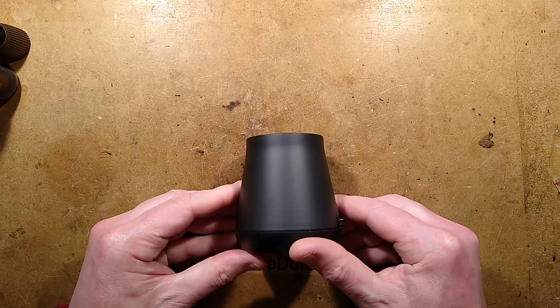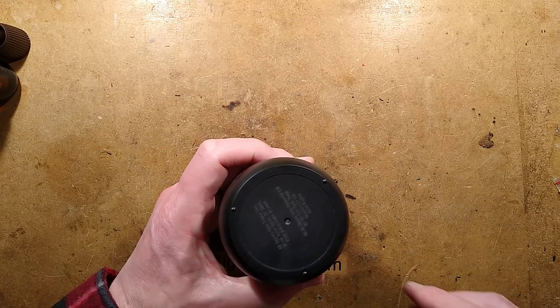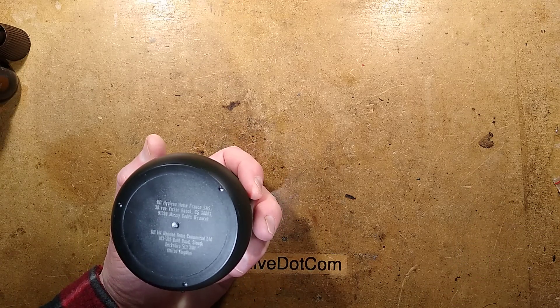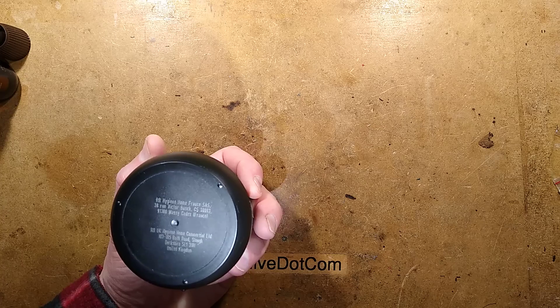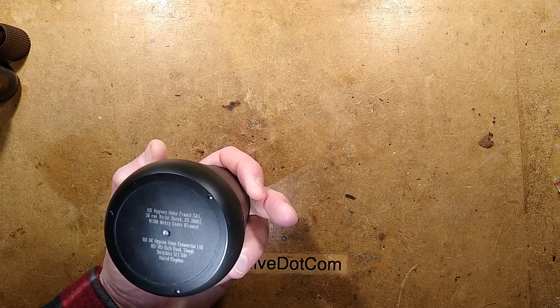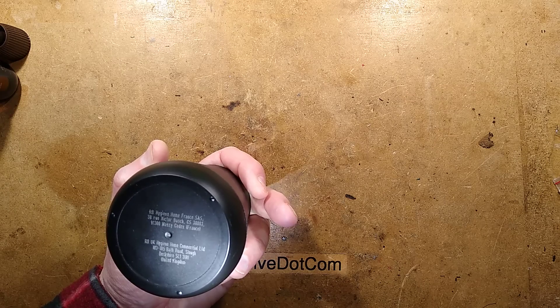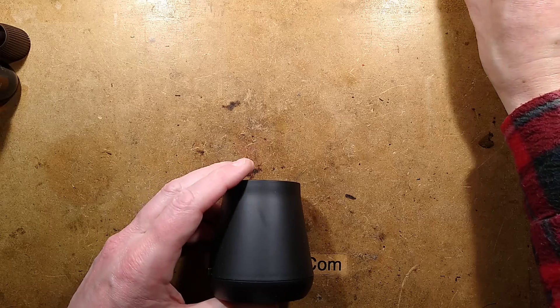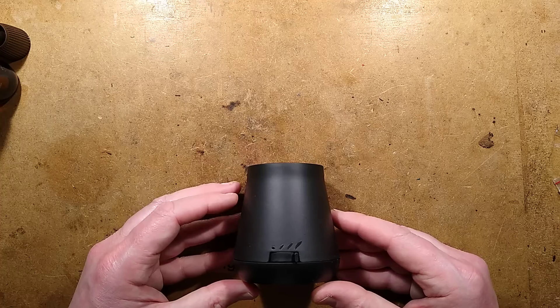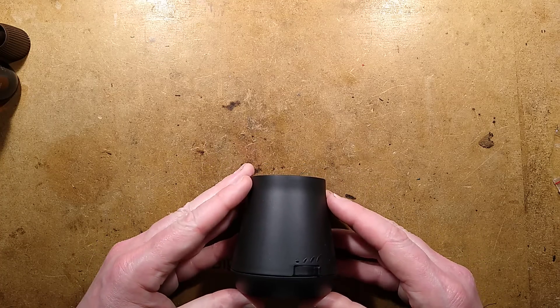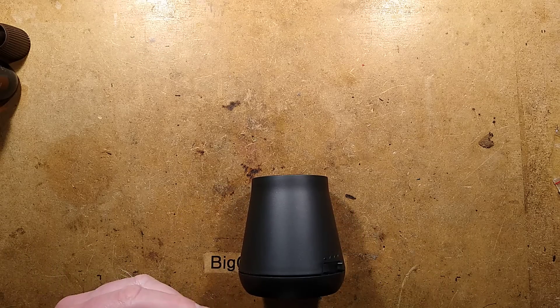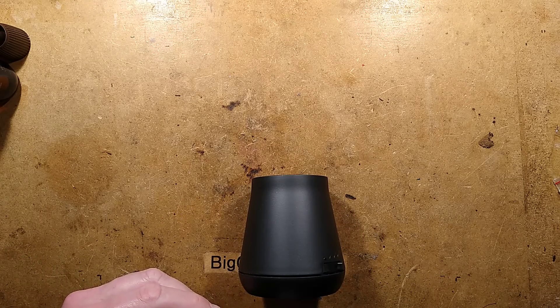So that is it, the Airwick Aroma Unit. Worth mentioning, on the back it says RB Hygiene Home France and RB UK Hygiene Home Commercial Limited, United Kingdom. Very odd. I don't know what that means. I don't know if that's just another subset of the Airwick brand. But it's neat. It's definitely an improvement. The smaller size means they can fit more in a crate ultimately when they're packaging it. It also looks quite neat and I think they have refined the electronics a little bit too. So pretty neat. Quite a nice little unit.